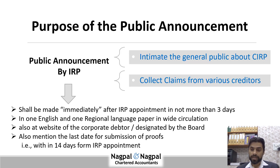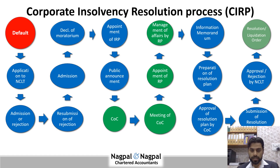What is the purpose of the public announcement? The public announcement is to be made by the IRP to make the general public aware about the CIRP process for the corporate debtor and to collate all the claims from different creditors. It shall be done by the IRP within three days of his appointment, published in one English and one regional language newspaper, and also displayed on the website of the corporate debtor and the website designated by IBBI. It also mentions that proof of claims shall be submitted within 14 days of his appointment. After the public announcement, all creditors of the corporate debtor will be aware of the CIRP process and will submit their claims.